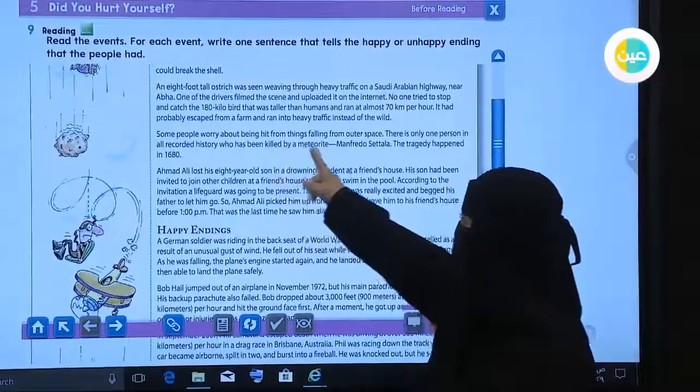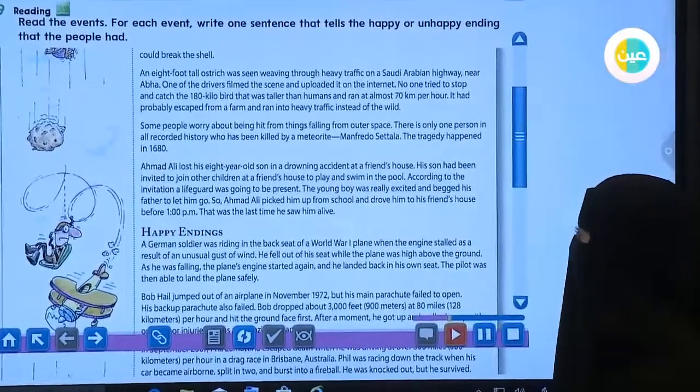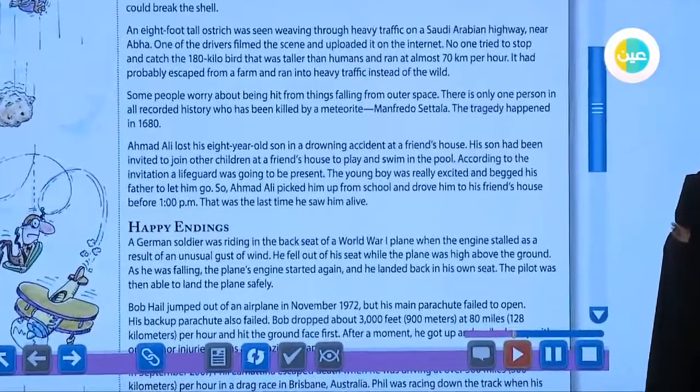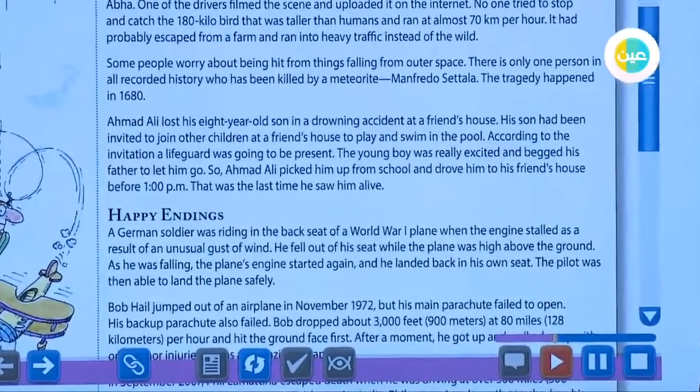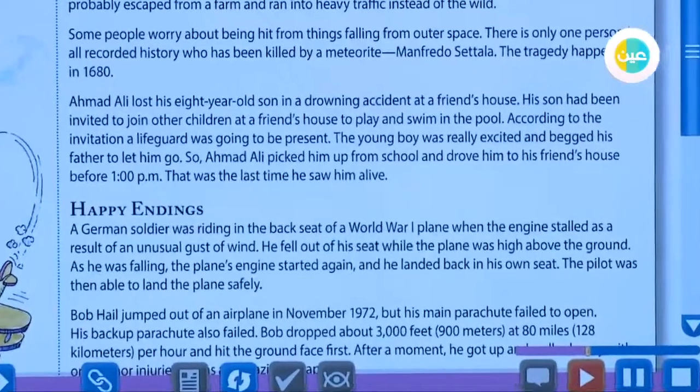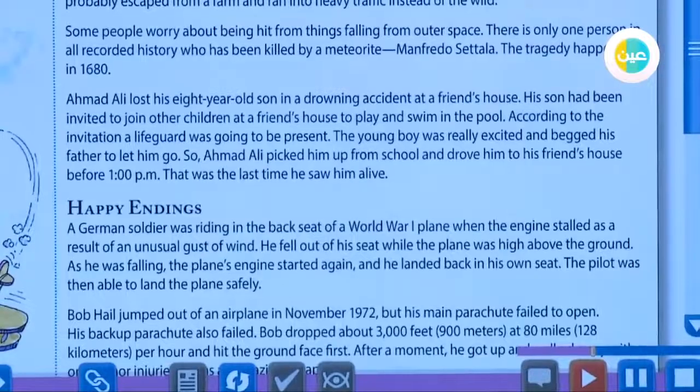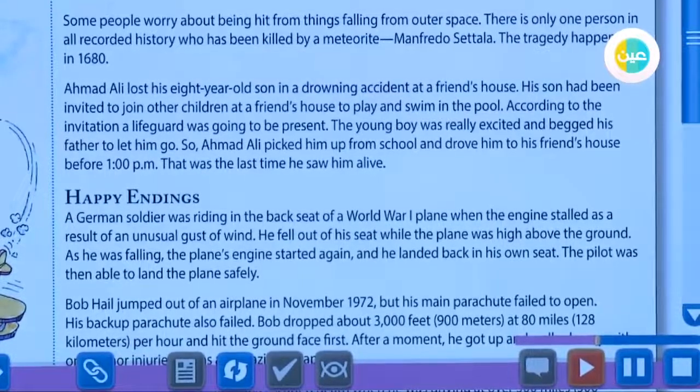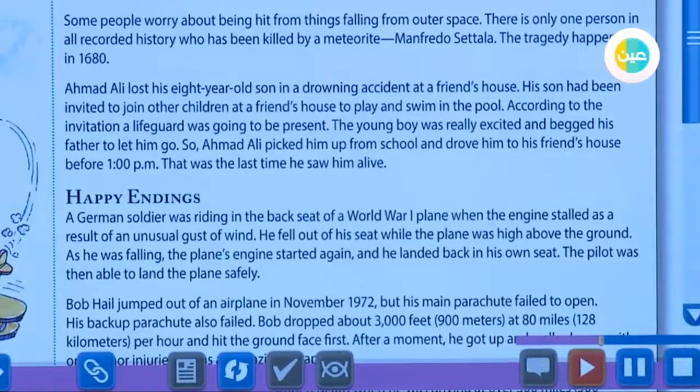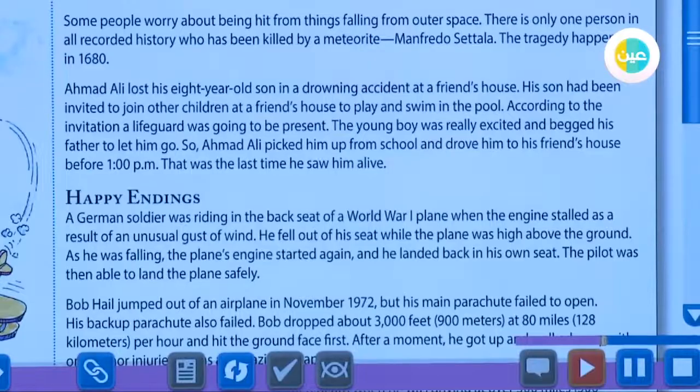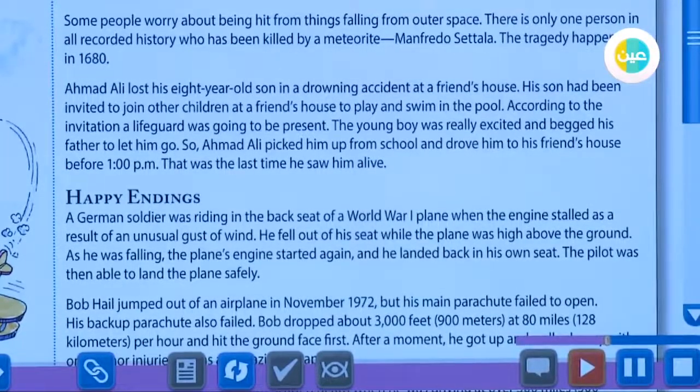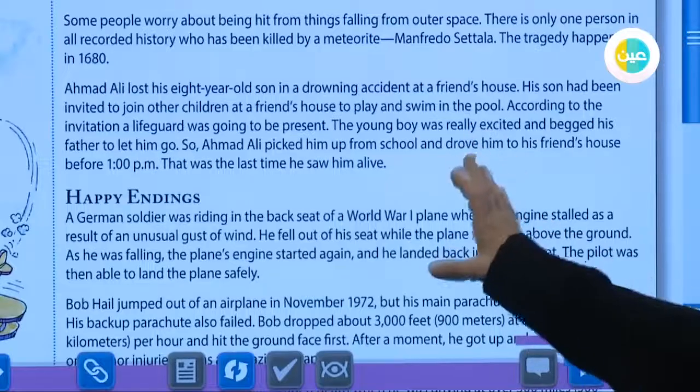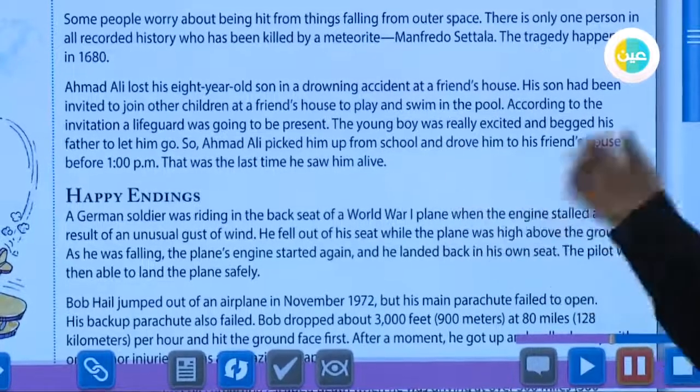Some people worry about being hit by things falling from outer space. There is only one person in all recorded history who has been killed by a meteorite: Manfredo Settala. The tragedy happened in 1680. Ahmed Ali lost his eight-year-old son in a drowning accident at a friend's house. His son had been invited to join other children at a friend's house to play and swim in the pool. According to the invitation, a lifeguard was going to be present. The young boy was really excited and begged his father to let him go, so Ahmed Ali picked him up from school and drove him to his friend's house before 1 p.m. That was the last time he saw him alive. This is the story of Ahmed Ali and his eight-year-old son and how he lost his son.